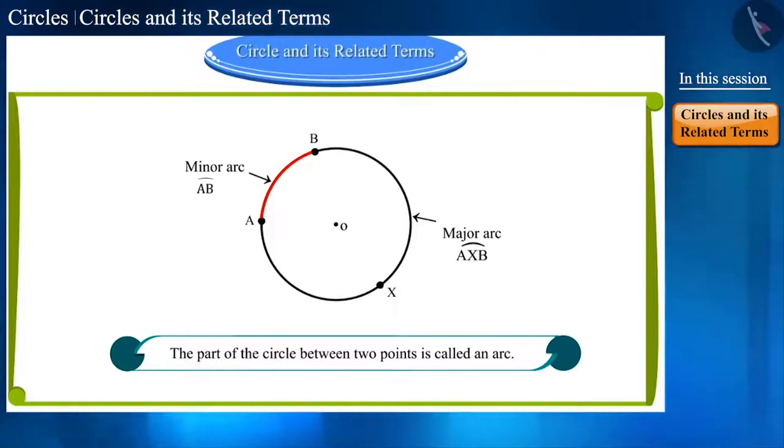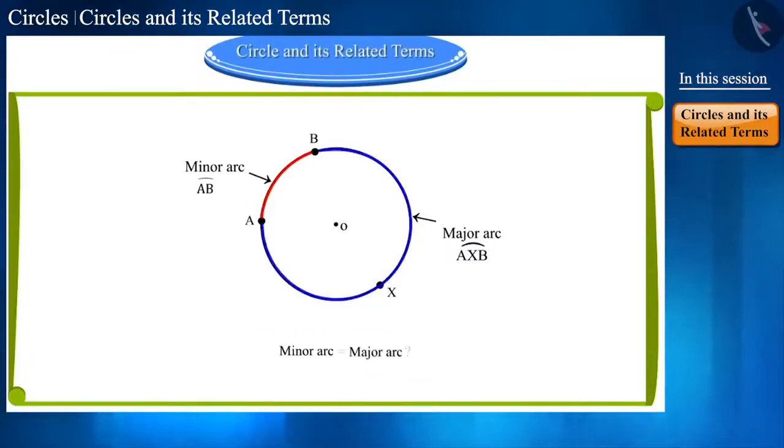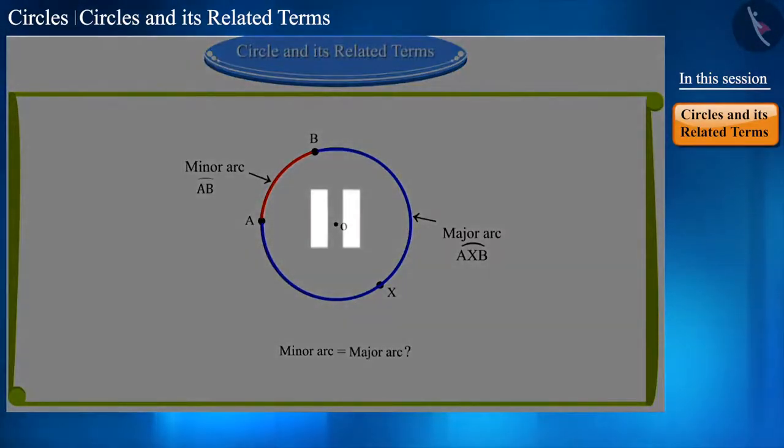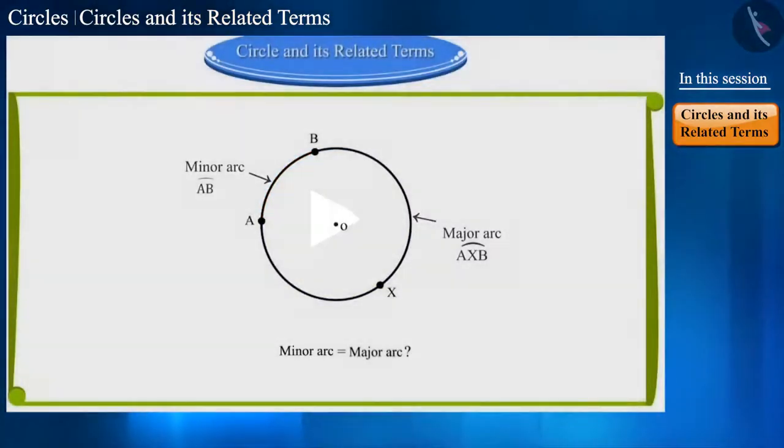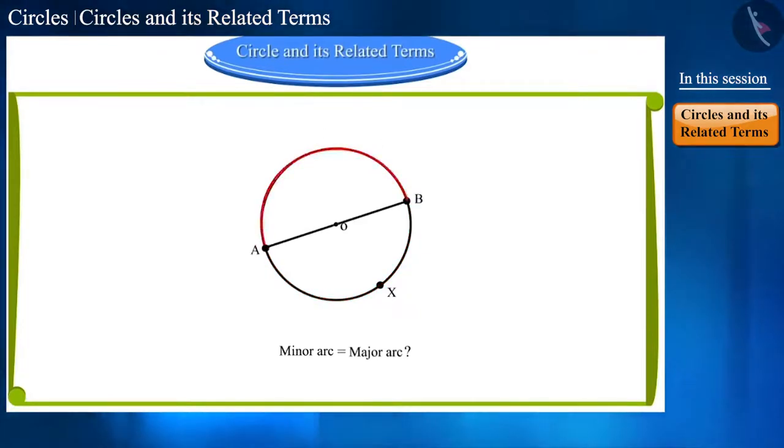That is, AB is the minor arc, which we write like this. And AXP is the major arc, where X is the point between them. Friends, can you guess when will these two arcs be equal? You can also pause the video to think about the answer. Yes, when both these points are the end points of the diameter of this circle, then the two arcs will become equal. Each arc thus formed is called a semicircle.